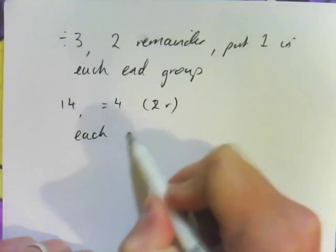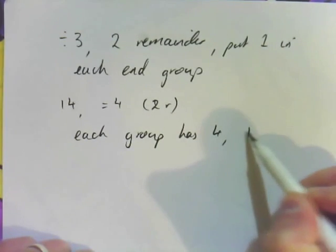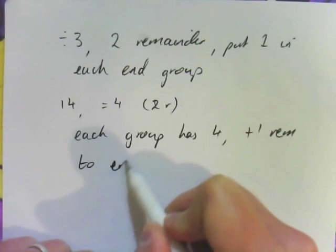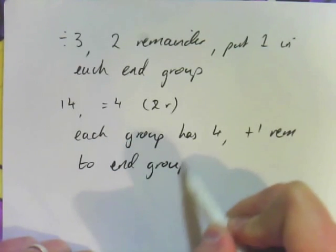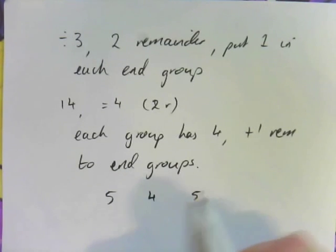So each group has 4 to start, and you add 1 remainder to end groups. So what you end up with is 5, 4, 5 in your 3 groups.